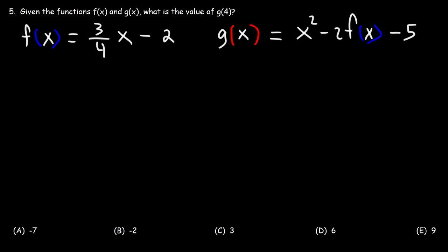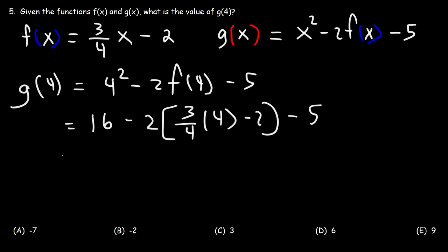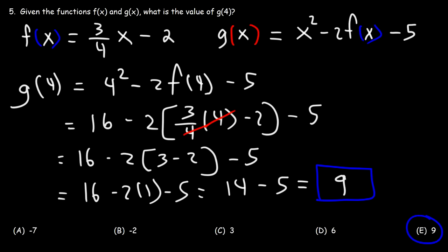Number 5. Given the functions f of x and g of x, what is the value of g of 4? Let's plug in 4: it's going to be 4 squared minus 2 times f of 4 minus 5. Now 4 squared is 16. For f of 4, we plug 4 into that function: 3 over 4 times 4 minus 2. The 4s cancel, giving us 3 minus 2, which is 1. So we have 16 minus 2, which is 14, and 14 minus 5 is 9. So g of 4 equals 9, which means E is the right answer.